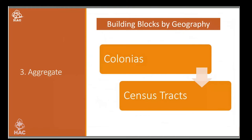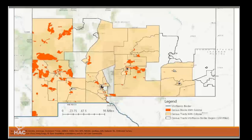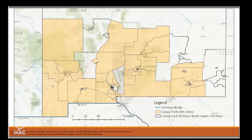The third stage is aggregation: building blocks of geography. We identified the Colonias, and to make the Colonia investment area, we aggregate up to the census tract level — doing this each state at a time. The black lines on the map are the actual census tracts. The orange identified areas are the located Colonias. Ultimately, we aggregate up to the census tract, and the light tan shaded tracts in this illustration show the Colonia investment areas — simply put, census tracts that have a Colonia located in them.